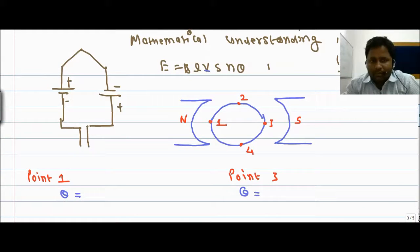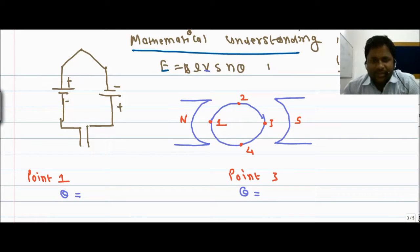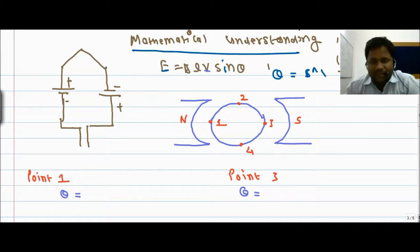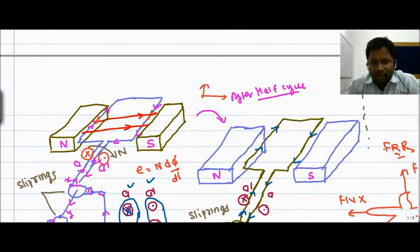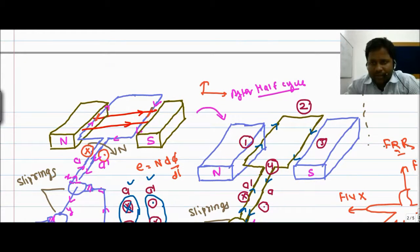Next we move on to the mathematical understanding. We know that the formula is E equals BLv sine theta, where theta is basically the angle between the magnetic field and the velocity vector. Here the magnetic field is going like this fashion. At point one, point two, point three, and point four — if we observe the conductor's velocity direction at each of these positions, we can map the induced EMF.